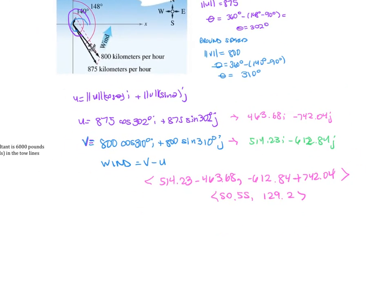Now let's find the wind speed. The magnitude of the wind is going to be the square root of 50.55 squared plus 129.2 squared, you add that together. So the magnitude of W is going to be approximately 138.7 kilometers per hour for the wind.